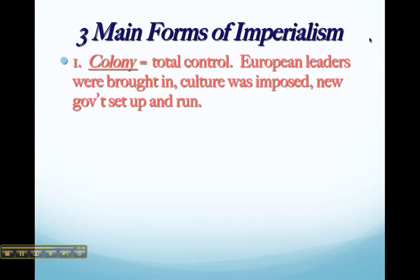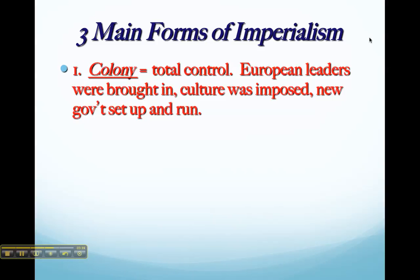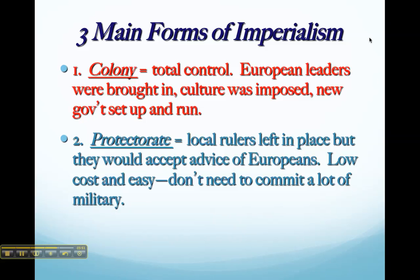There are three main forms of imperialism. The first is the one we're familiar with — a colony — where there is total control: European leaders come in, impose culture, and set up a government. It's very time-consuming and expensive. A cheaper way is to set up a protectorate, where local rulers are left in place but do whatever the European government tells them. This requires less military commitment and is more palatable to the people being imperialized.